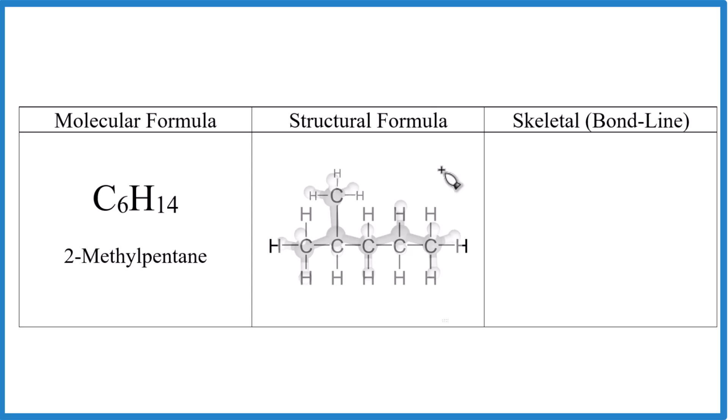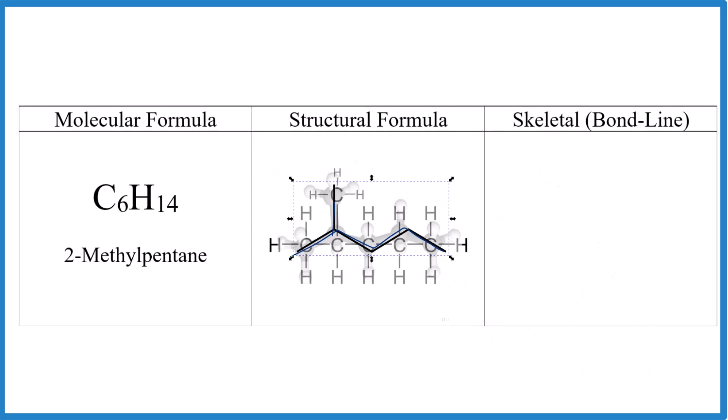If we wanted to draw the skeletal formula, we're just going to draw the carbons. So we could draw it like this here. 1, 2, 3, 4, 5 carbons, and then we just draw a line up here to this carbon. That's going to look like this.